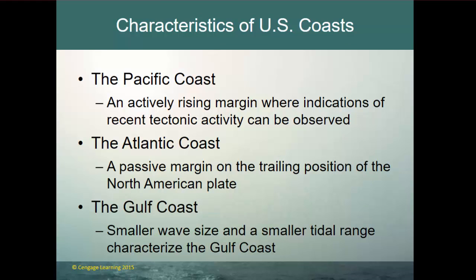Characteristics of U.S. coastlines: the Pacific coast is an actively rising margin where indications of recent tectonic activity can be observed — it is an emergent coastline. The Atlantic coast is a passive margin on the trailing position of the North American plate. The Gulf coast is an enclosed basin with smaller wave size and smaller tidal range. On the Atlantic coast you get two high tides and two low tides per day, while the Gulf coast gets only one, because it is that smaller enclosed basin where water sloshes back and forth over 24 hours.